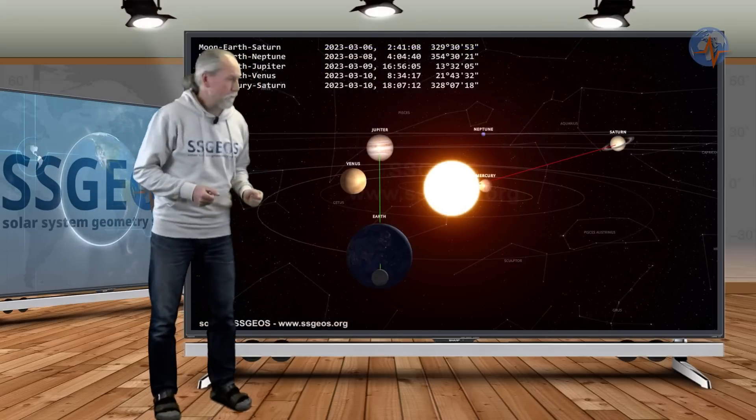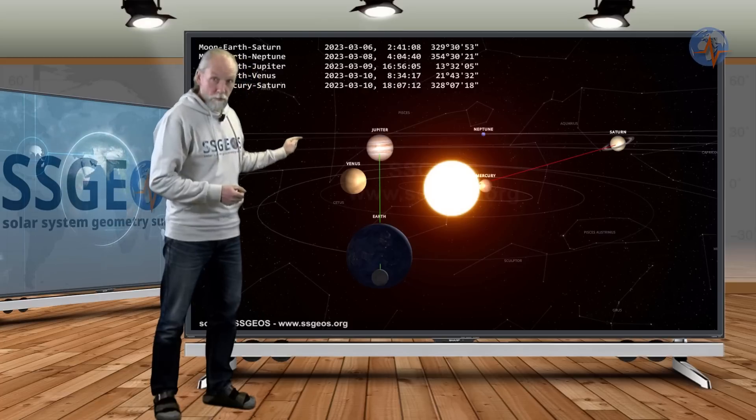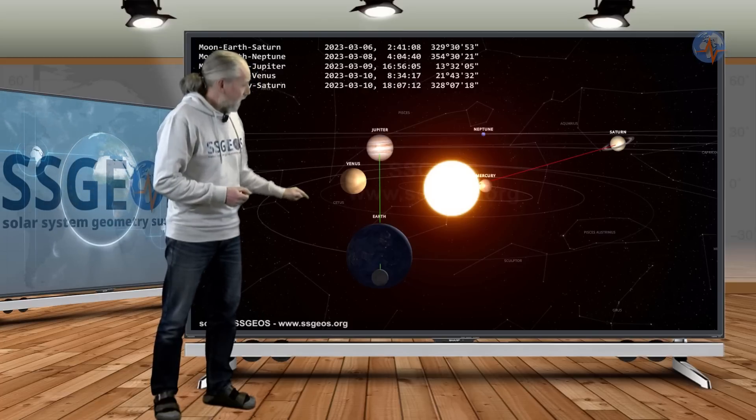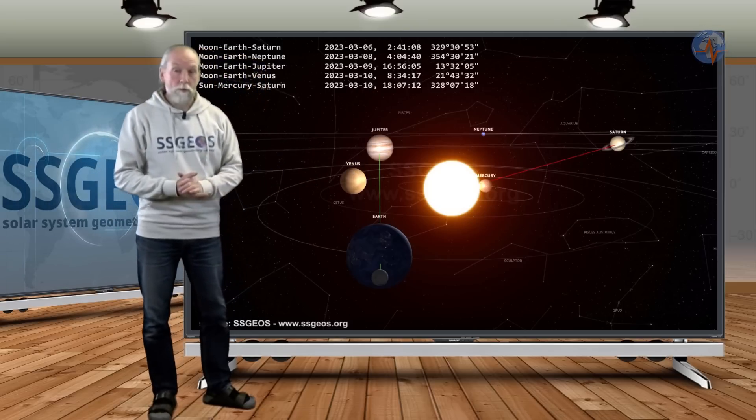If you look at the solar system, we actually see the lunar peak. This is the lunar conjunction with Jupiter marked by the green line, and we also see Sun, Mercury, and Saturn in a conjunction that will be on the tenth.